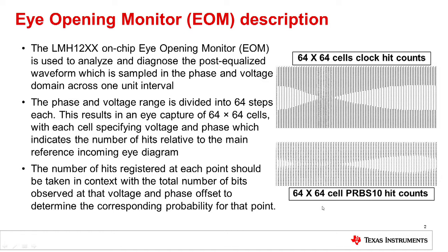The phase and voltage DAC range — called PDAC and VDAC respectively — have 64 steps each. This results in an array of 64 by 64 cells. The delta or difference between two adjacent vertical cells specifies the number of hits, or number of times the signal passes through a cell. If a cell value doesn't change with respect to the previous vertical cell, or if it is zero, this means there is no hit or eye crossing. The number of hits at each point should be normalized to determine the probability for a specific hit count to occur.